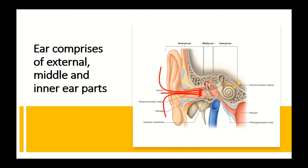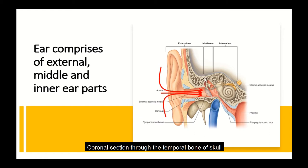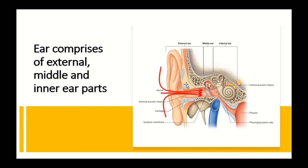The ear comprises three sub parts: an external ear, a middle ear, and an inner ear. We can understand that by looking at this illustration, which shows a coronal or side-to-side section taken through the skull at the level of the temporal bone. You can see the three different sub parts of the ear clearly shown here, much of which resides inside the petrous part of the temporal bone.